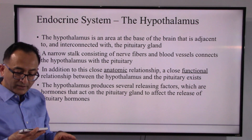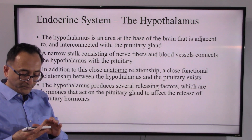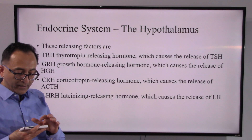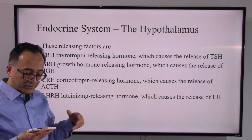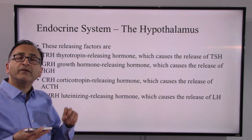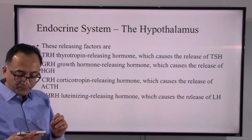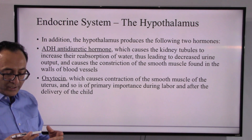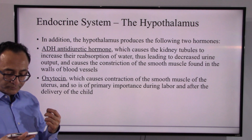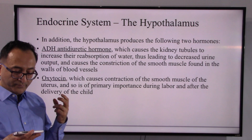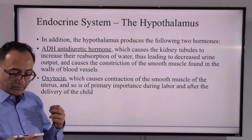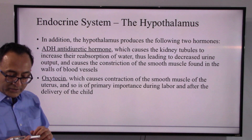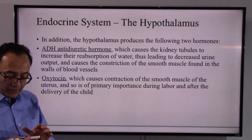Not only do they have an anatomic relationship, but they also have a functional relationship. Various hormones are involved — TRH, GRH, CRH, LH-RH — and additionally, ADH (the anti-diuretic hormone) and oxytocin are released by the hypothalamus. Oxytocin is needed during delivery of a child for smooth muscle contraction of the uterus.